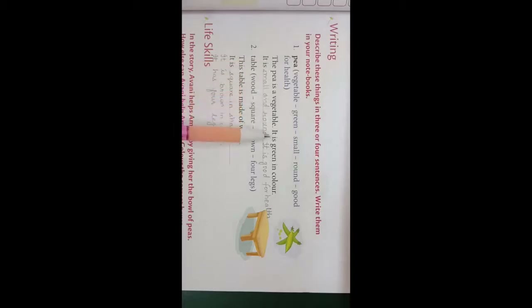Describe these things in 3 or 4 sentences and write them in your notebooks. Use the helping words given in brackets. Number 1 is pea. The sentences are: The pea is a vegetable. It is green in color. It is small and round. It is good for health.